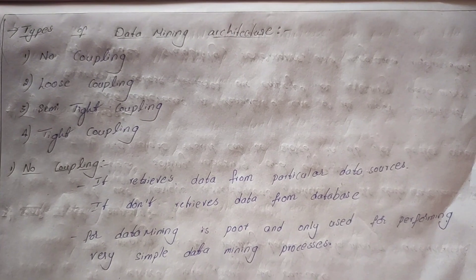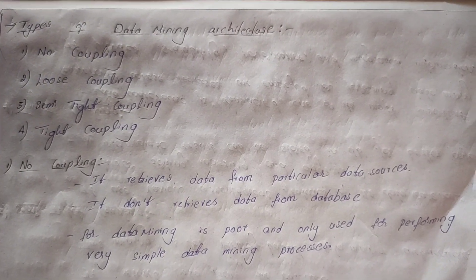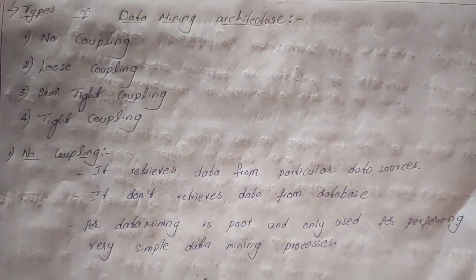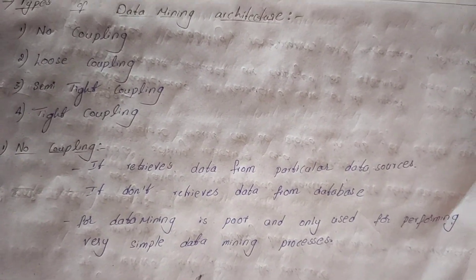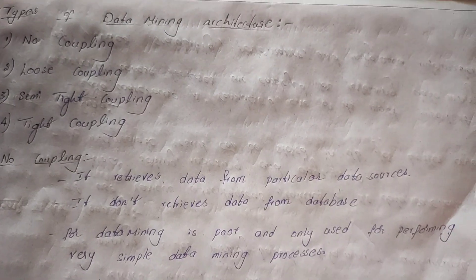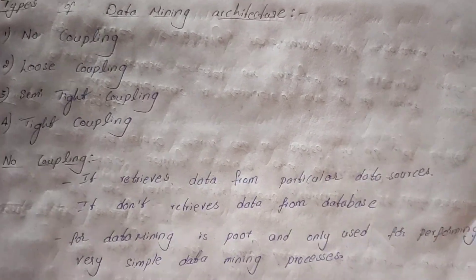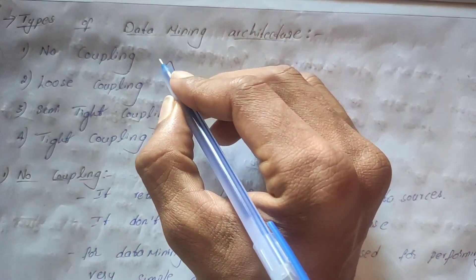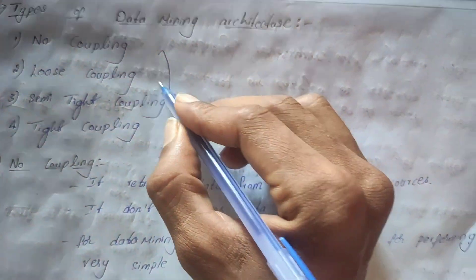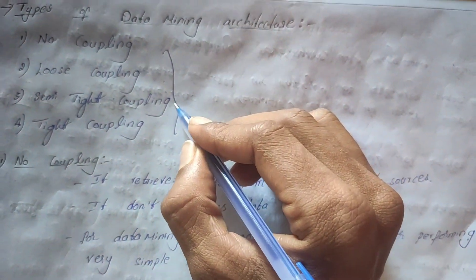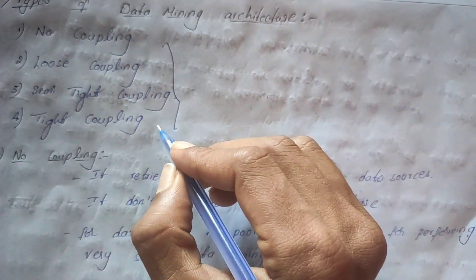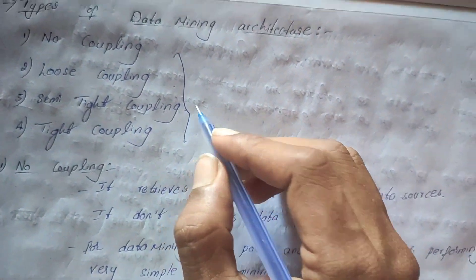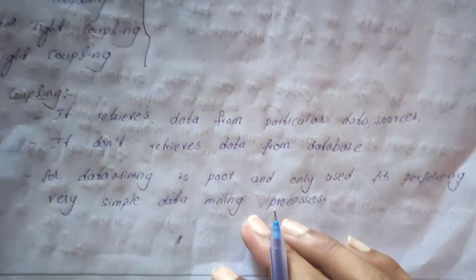Welcome back to my channel, The Machine Brain. Today we will discuss the types of data mining architecture. There are four types of data mining architecture: no coupling, loose coupling, semi-tight coupling, and tight coupling.